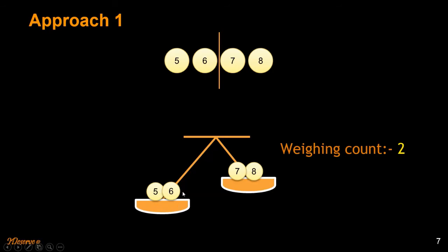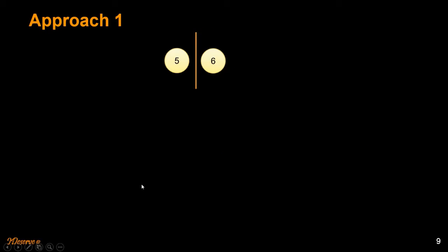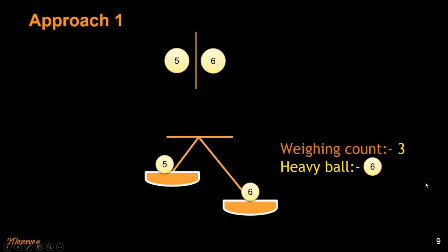We have to do one more weighing using this balance. So in that we find that six is heavier. Basically we are using the balance three times. Is there a better way to do this?